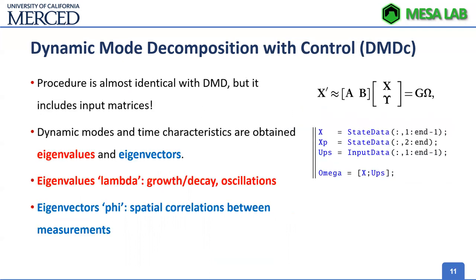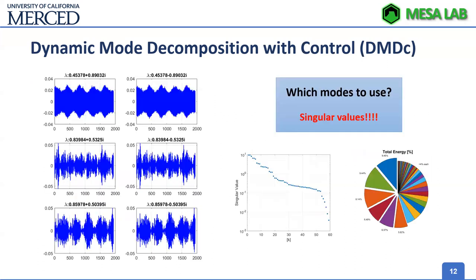With almost the same procedure for DMDc, eigenvalues and eigenvectors can be extracted as growth-decay oscillations representing time characteristics and spatial correlations between the measurements.